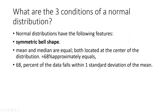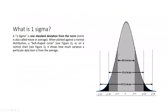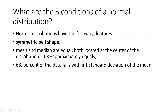There are three conditions of normal distribution — how we can say data is normally distributed. First: symmetrical bell shape. The curve should be symmetrically bell-shaped, meaning when we divide the curve into two parts, both halves are identical — the left side and right side are the same. Second: mean and median are equal, both located at the center of the distribution.